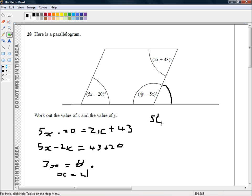So, and this time we know what x is equal to. So 5 times 21 minus 40, sorry, minus 20, plus 4y minus 5 times 21 is equal to 180 degrees.